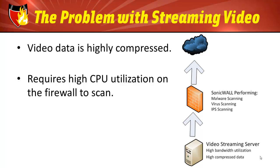The problem with streaming video from the LAN side of your network is that the data coming from that video server is highly compressed, and as that data traverses the SonicWall, it's actually going through several different engines, including malware scanning, virus scanning, and intrusion prevention scanning engines. We know that the video streaming from that server doesn't need to go through those three engines, but as it does, it requires the CPU utilization to spike on your SonicWall Firewall.